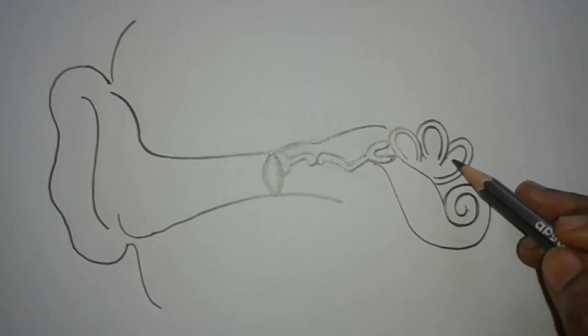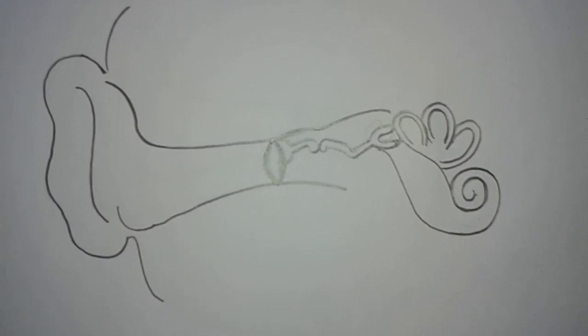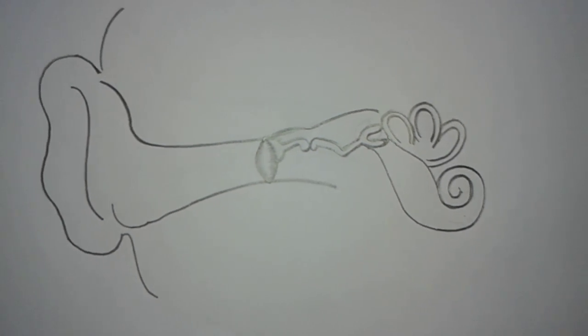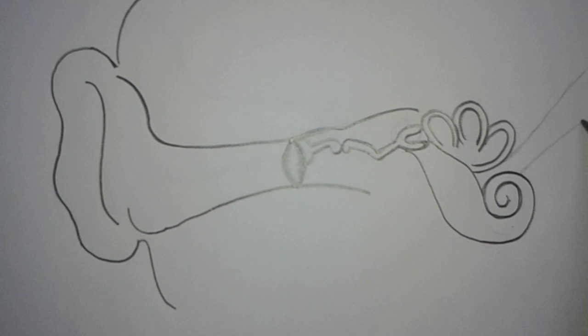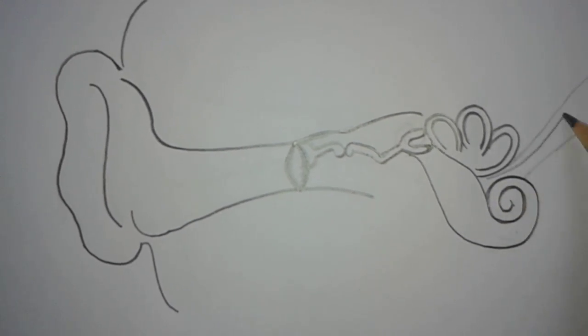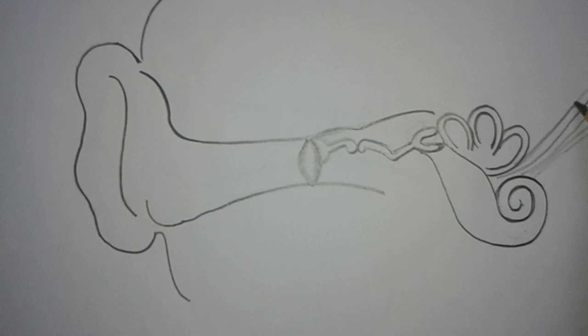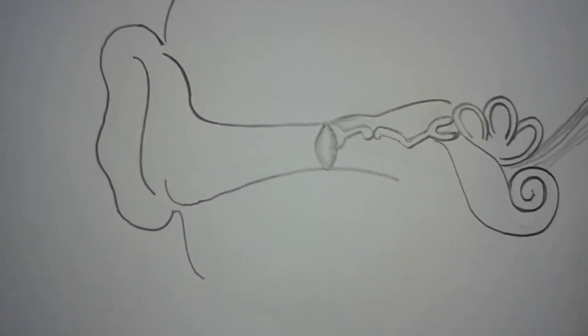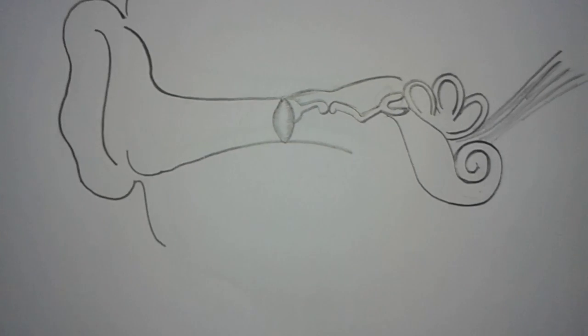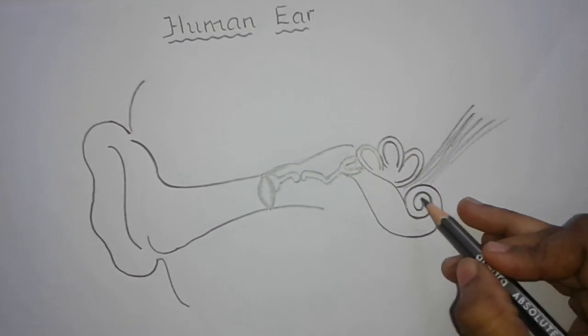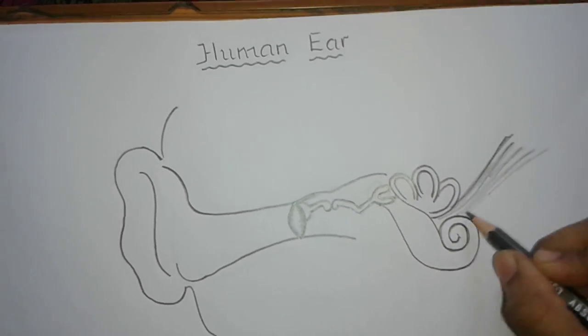The function of the utriculus and sacculus is they maintain balance of the body. Now from here draw the auditory nerve. The cochlea contains receptors which join together to form the auditory nerve.